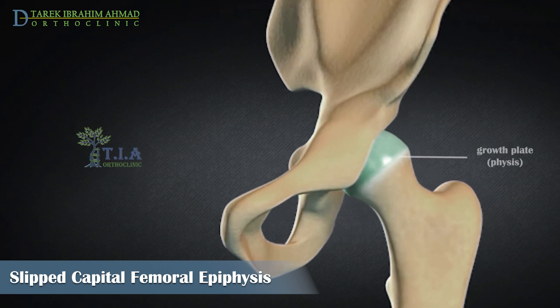Like the other long bones in the body, the femoral growth occurs at each end of the bone around an area of developing cartilage called the growth plate.